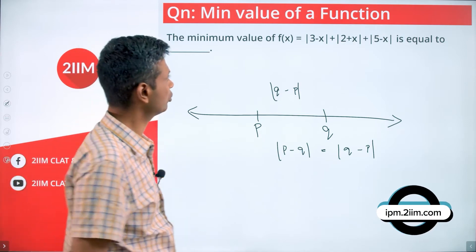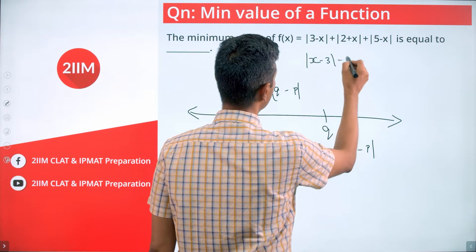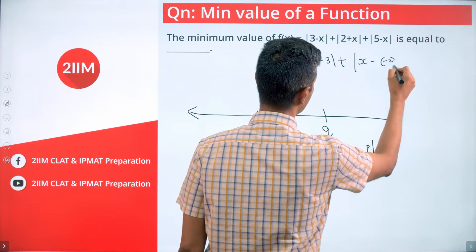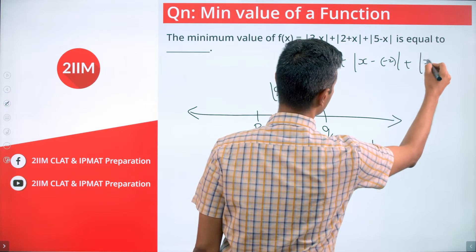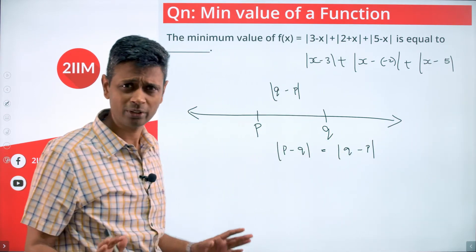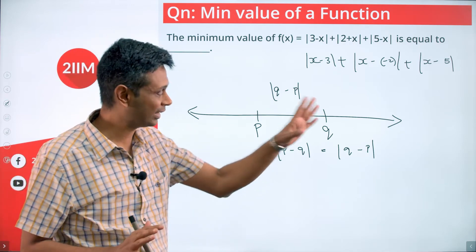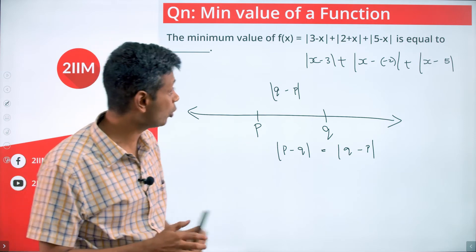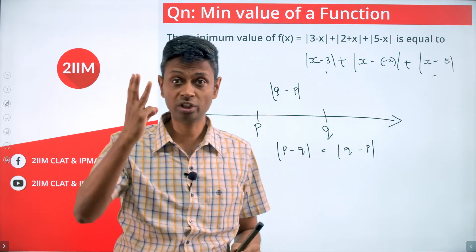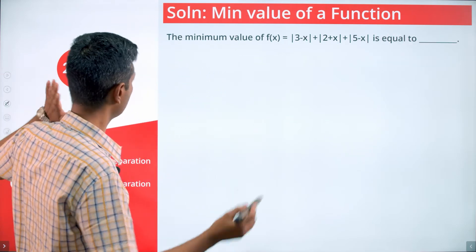So I'm going to rewrite the expression as |x - 3| + |x - (-2)| + |x - 5|. We don't strictly need to rewrite it, but doing so helps us think about the three interesting points: 3, -2, and 5. I'm going to mark those three points on the number line.